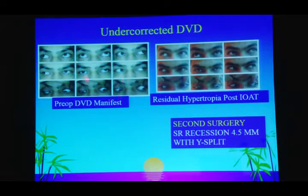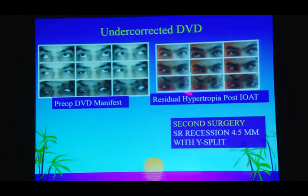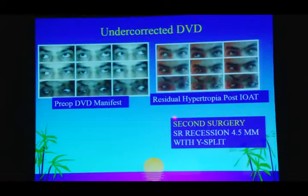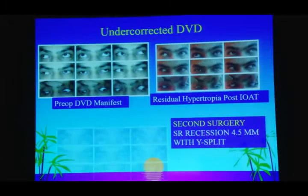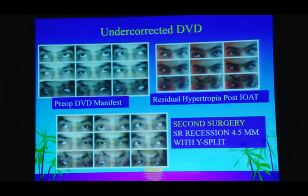DVDs are very commonly undercorrected despite best efforts. In this case, an IO-80 was done by someone else but a residual hypertrophia remained. So we decided to do an SR recession with a Y-split — a relatively newer procedure in which you perform recession with Y-split of the SR to induce a Farden-like effect.